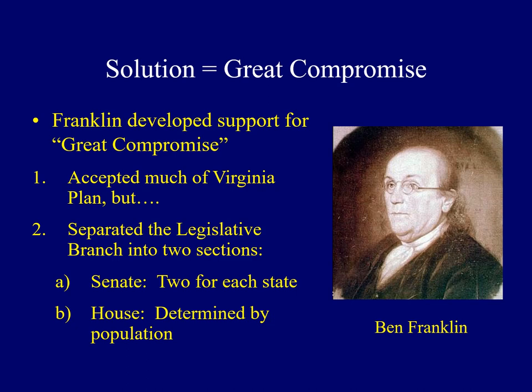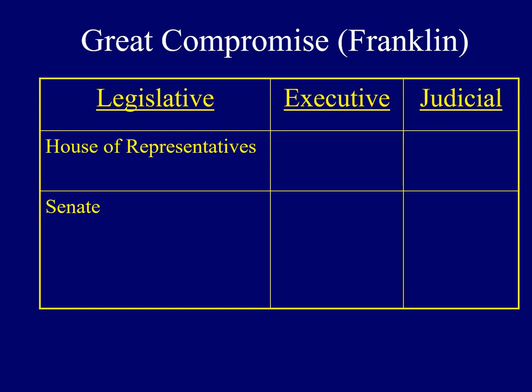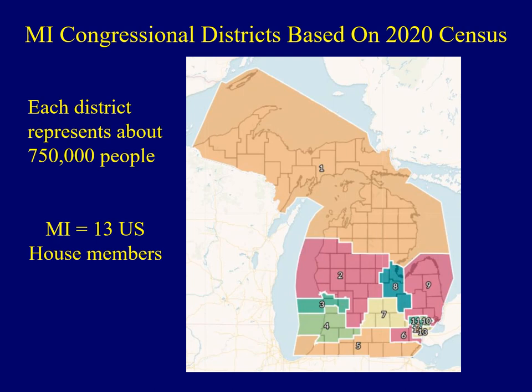The big states liked the makeup of the House of Representatives, and the small states liked the Senate. Here we see that visual representation of the separation of powers and the Great Compromise. The legislative branch was divided into the House and Senate. The number of representatives for each state was based entirely on a state's population, and this made people from the large states happy.